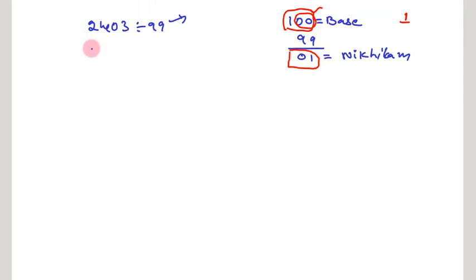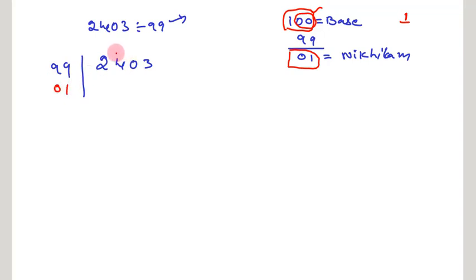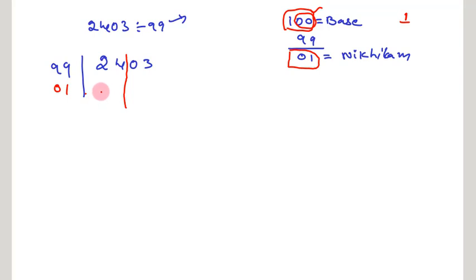Before going to do the division process, firstly we have to adjust this dividend and divisor in this manner. Then we have to write down the Nikhilam of our divisor. The Nikhilam of our divisor is 0, 1. Then we have to separate our dividend into 2 parts by taking a line after 2 digits from the right — that means after the 10s place, we take a straight line. This straight line divides our dividend into 2 parts: the first part is known as the quotient part and the second is the remainder part.